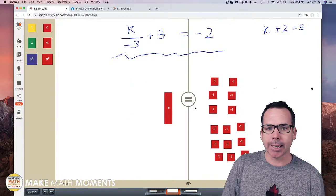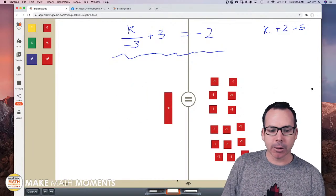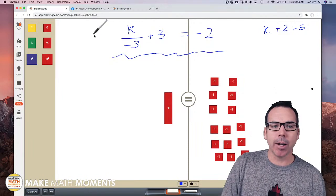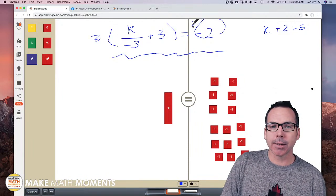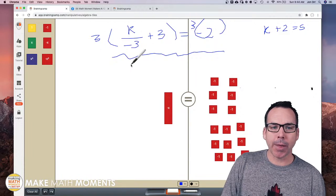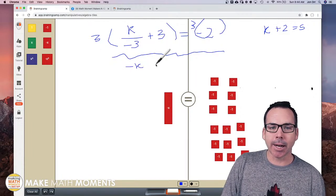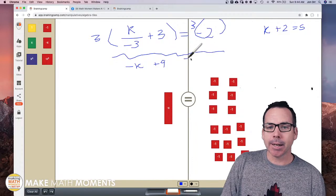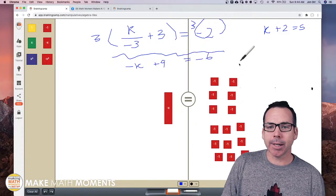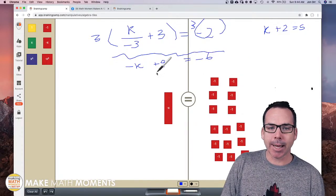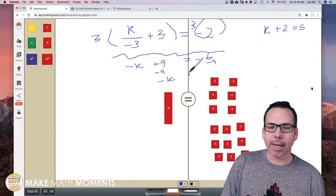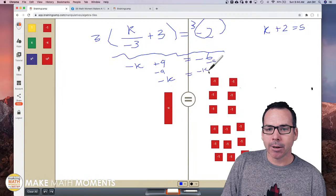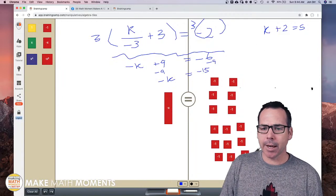Now algebraically, look what we've just done. We have said, you know what, I'm tripling both sides of this equation. When I triple that, I get one minus K - I've got a minus K - and I get plus nine, and then equals minus six. Then what do we do? Well we added negative nine to both sides. Now I'm at a spot where negative K equals negative 15.